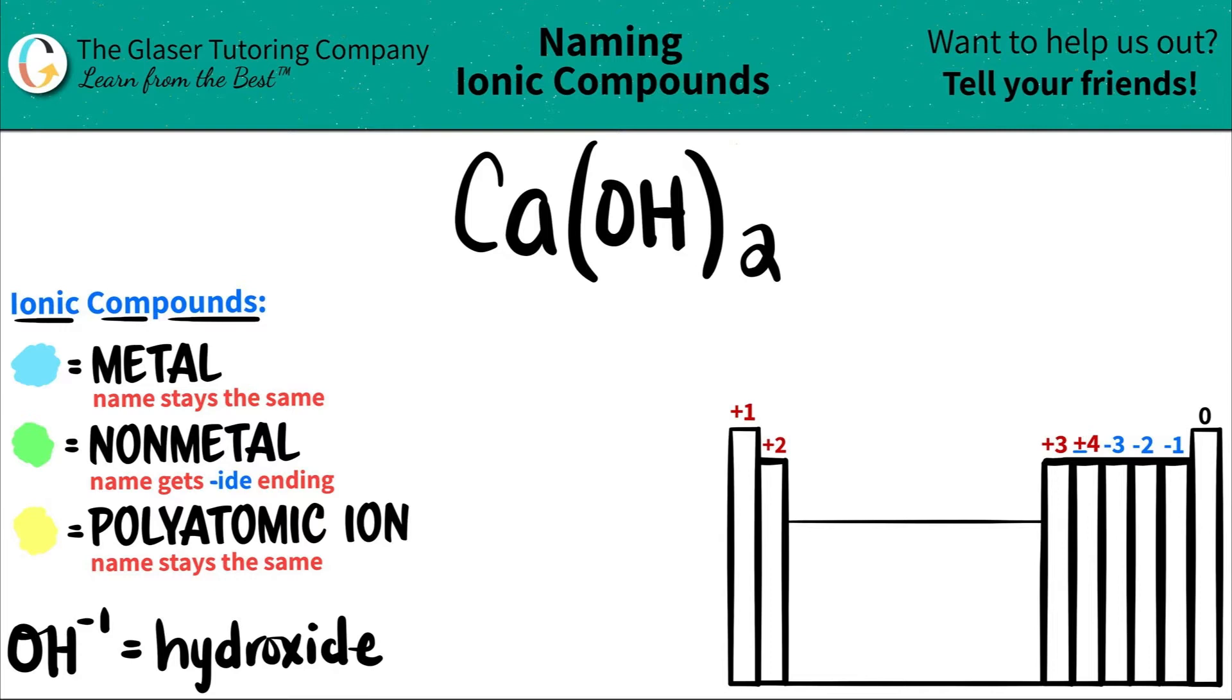Now here is a trick, guys. If you have a compound that has three or more different elements in it, you know you're dealing with at least one polyatomic ion.